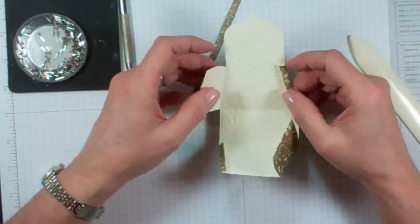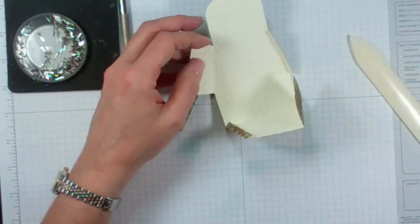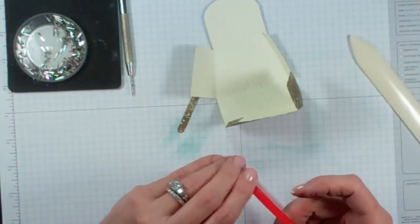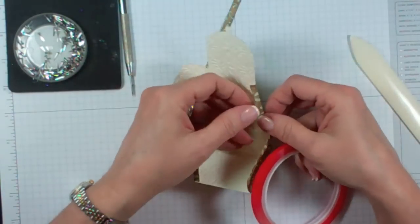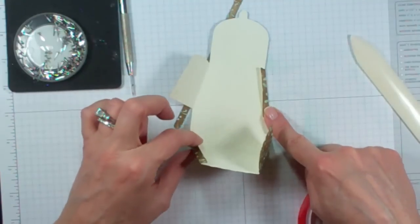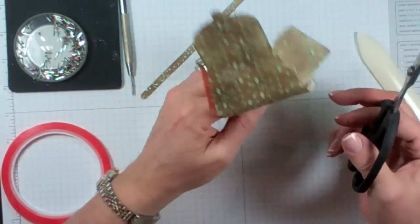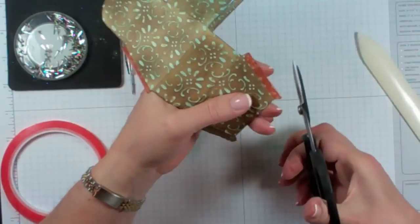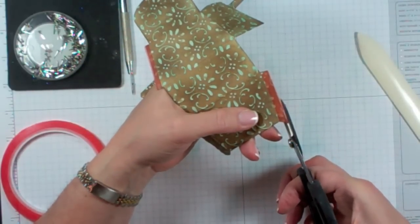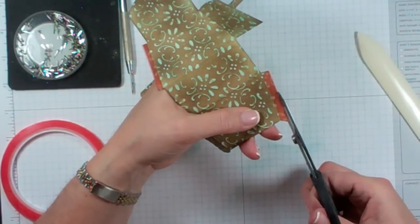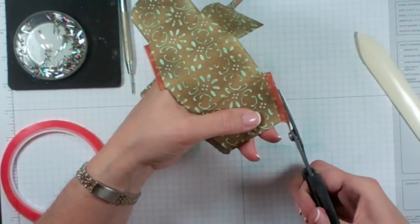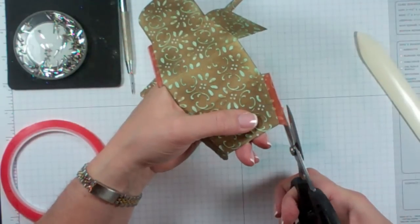Once you have everything scored, you're then going to take some sticky strip and put it on the tiny tab on this side and the tiny tab on this side. Now if you notice, the sticky strip is wider than the tab. So I'm just going to take one of my crafting rubber scissors and trim that edge a little bit so that I don't have any sticky strip sticking over the edge.